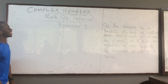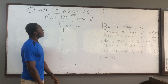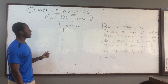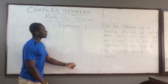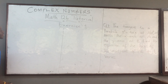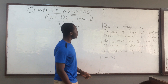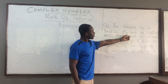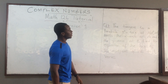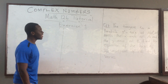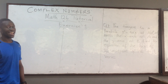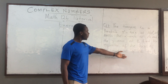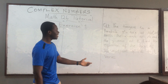Welcome everyone. Today we will be looking at a question on Exercise 1. Our first question would be question 7. We have a problem: the tangent to a parabola, given by y² = 4ax, at a point meets the x-axis at A and the y-axis at B.